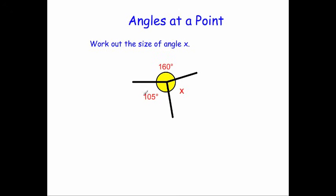So let's add together the two angles we're given: 160 degrees and 105 degrees. I would recommend the column method for this. 0 plus 5 is 5, 6 plus 0 is 6, and 1 plus 1 is 2. So these two angles add up to 265 degrees. But we know the whole thing is 360, so if we take the 265 away from the 360, that will tell us what's left for angle X.